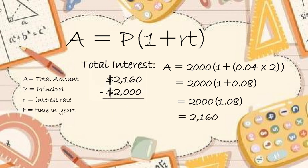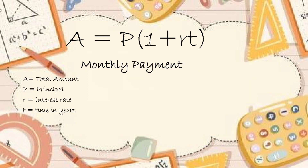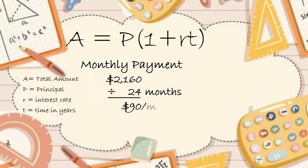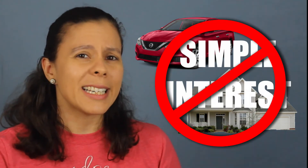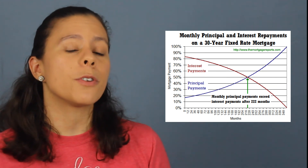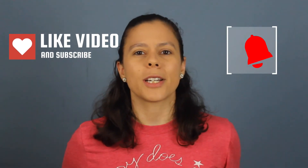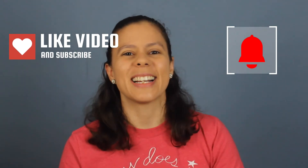That means that I'm going to pay a total of $160 worth of interest. Now if you want to know how much you'll pay per month, all you gotta do is divide the 2,160 by 24, which is about $90 per month. And if you want to practice some more, I left you a worksheet in the video description. However, for larger purchases like cars and houses, simple interest is rarely ever used if at all. Instead what banks normally do is they calculate interest by using a formula called amortization. If you want to find out how amortization works, make sure to like this video, subscribe, ring the notification bell, and then check out my next video. See you there!